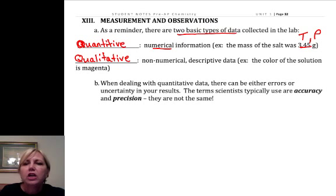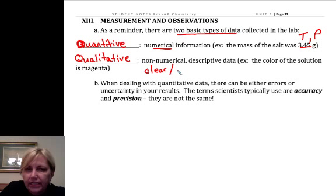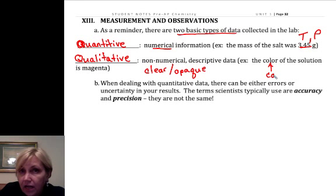Quantitative is going to be about clarity. Is it clear or is it opaque? Does it have a color or is it colorless? Notice there's a big difference between colorless and clear. Those are describing two different attributes of a substance.